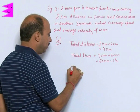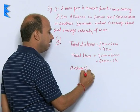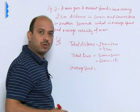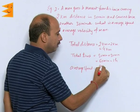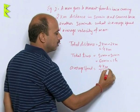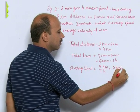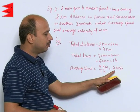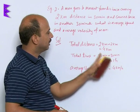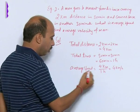Average speed equals total distance divided by total time: 4 kilometers divided by 1 hour equals 4 kilometers per hour. Note that kilometers per hour can also be used to represent speed.